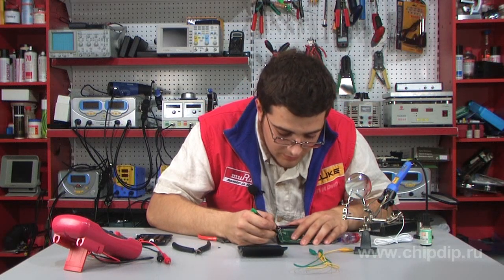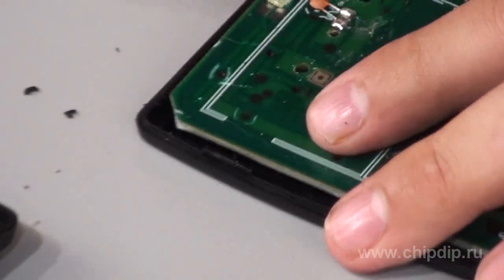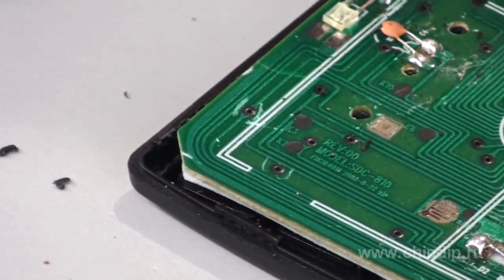Having done that, we find the first and the second contact of the equal sign. We solder the wires to these contacts.